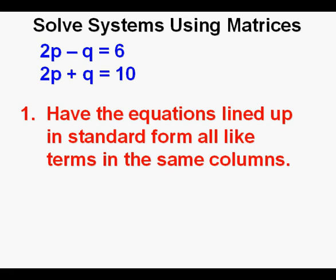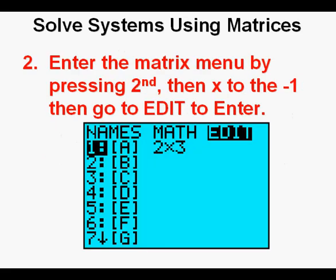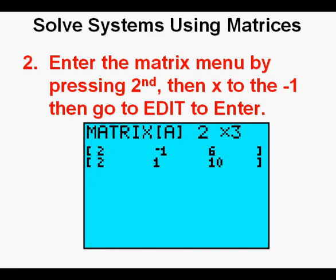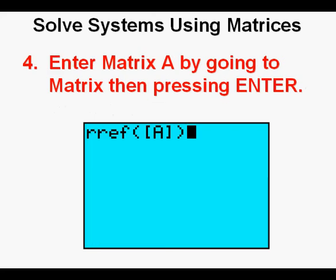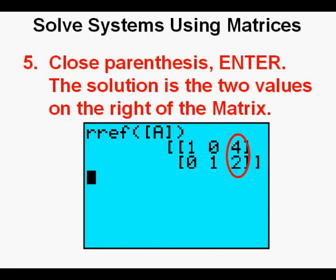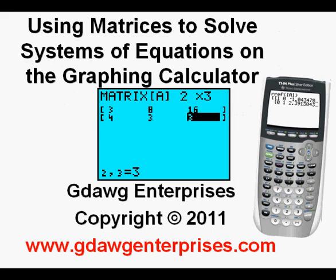Just a few things to remember: have the equations lined up in standard form with all like terms in the same columns. Enter the matrix menu by pressing 2nd then x-to-the-negative-1, then go to Edit. Clear the screen, then go to matrix Math and scroll down to RREF — or press alpha then B to avoid scrolling. Enter matrix A from the Names submenu, close the parentheses, press enter, and pick out the numbers on the right — they are your solution.